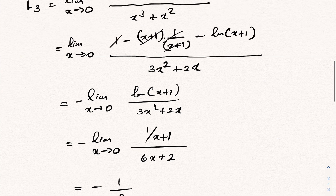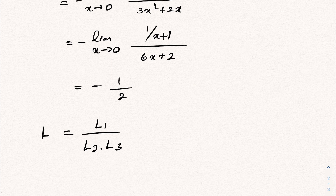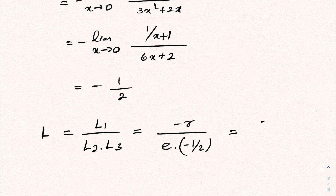So L3 equals minus 1 half. The final answer is L equals L1 divided by (L2 times L3). With L1 equal to minus gamma, L2 equal to e, and L3 equal to minus 1 half, we get 2 times gamma over e. This is the answer for this limit. If you like this type of video, please subscribe to the channel — thank you for watching!